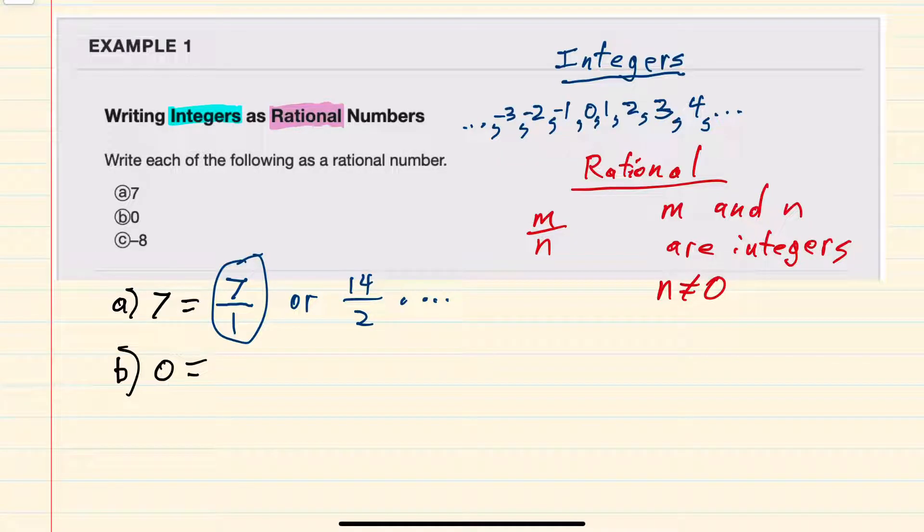For b, we're asked to write 0 as rational. So here my fraction can be written with a 0 and again just a 1 in the denominator.